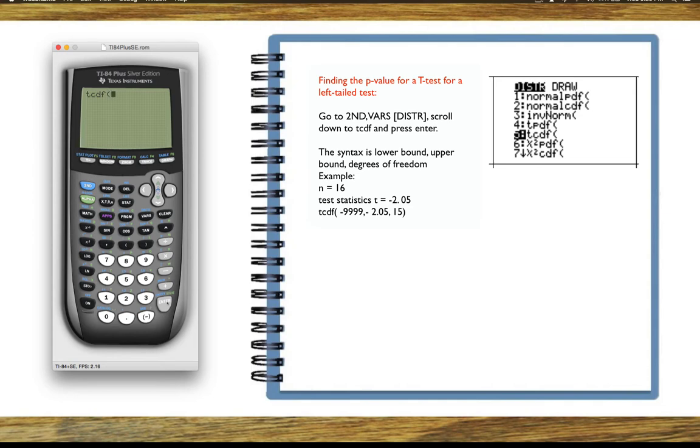What we need to enter first is our lower bound, which is negative 9999 since we have a left tail test, comma, then we enter the upper bound, which is negative 2.05, comma, and the sample size is 16, that makes the degrees of freedom 15. Close the parentheses, press enter.